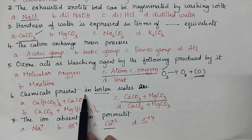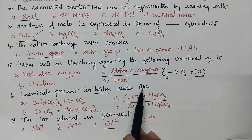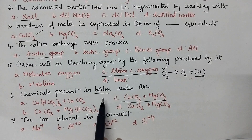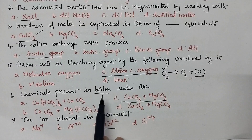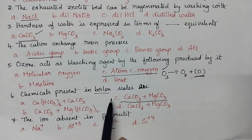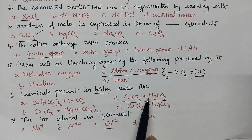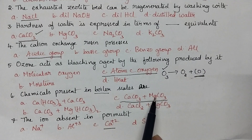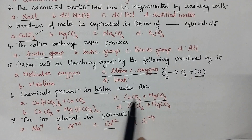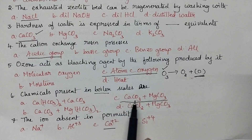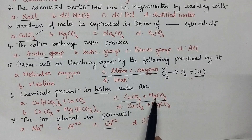Chemicals present in boiler scales: whenever water is continuously boiled in boilers, the carbonates of calcium and magnesium slowly precipitate out in the form of scales. So, the boiler scales mainly contain calcium carbonate and magnesium carbonate.